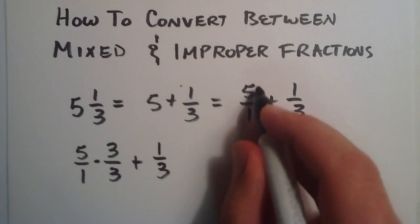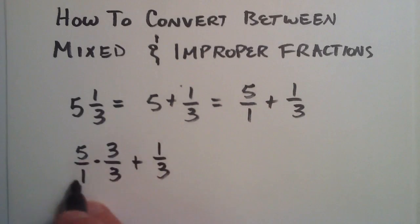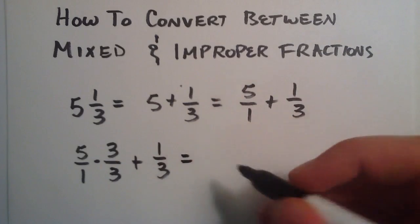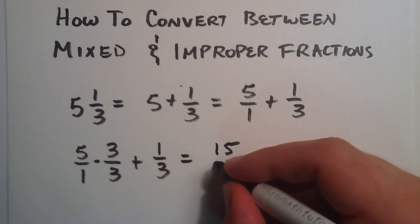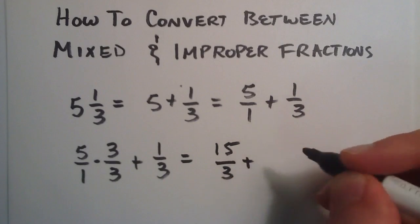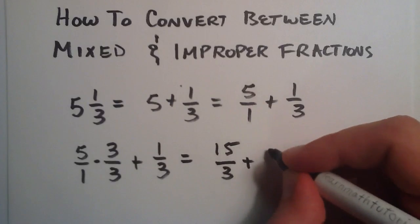So this is the same thing. Here's our 5 over 1 term multiplied by a disguised 1, and our second term, the 1 third. Now 5 times 3 is 15, and 1 times 3 is simply 3. And we add that to our second term, 1 third.